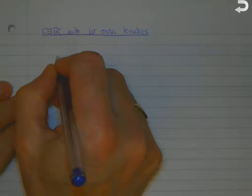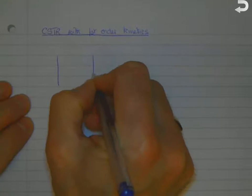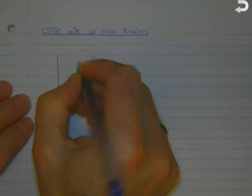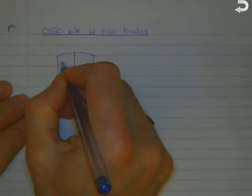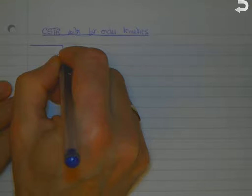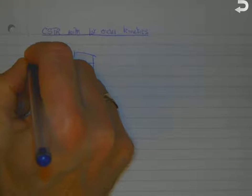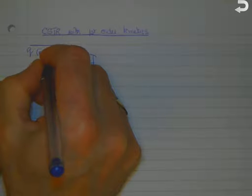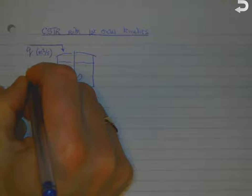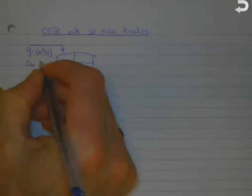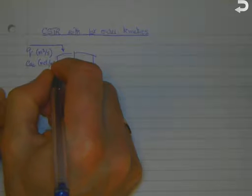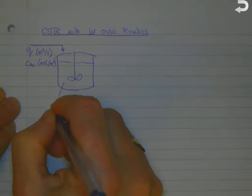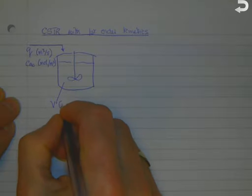Let's look at the case of a CSTR with first-order kinetics. This is a quick schematic of a CSTR. It's got a feed rate Q, volumetric feed rate in meters cubed per second, and that feed contains our starting material A at concentration CA naught moles per cubic meter.